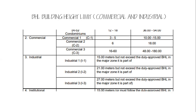If you have a project in Lapu-Lapu City, that airport zone restriction is an important consideration. Industrial 2 allows 21 meters but must not exceed the duly approved BHL for its major zone. Industrial 3 allows 27 meters, also not to exceed the duly approved BHL in the major zone it is part of.